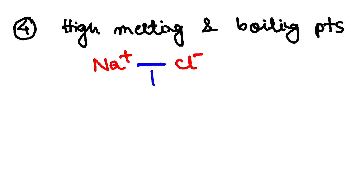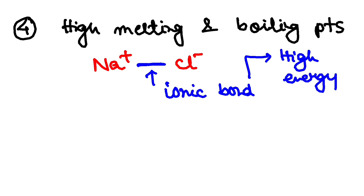So, this ionic bond requires huge amount of energy. Ionic bond needs high energy to be broken. And that is why you need to supply more heat to melt or boil an ionic compound. And that is why ionic compounds have high melting and boiling points.